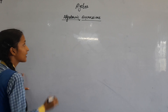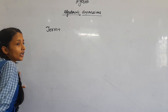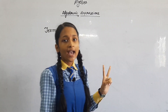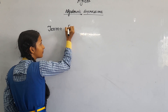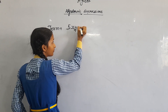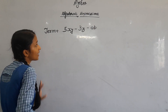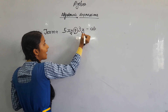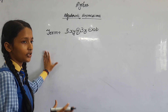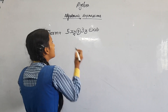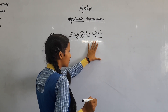Then we will come to our next topic: term. The term is separated by only two signs — minus and plus. Here we see there is a plus sign and here is a minus sign, so here is three terms. The minus and plus signs separate the terms, so here is one term, two, and three — so here is three terms.